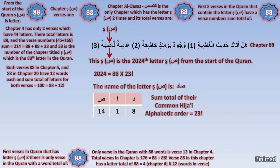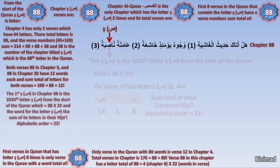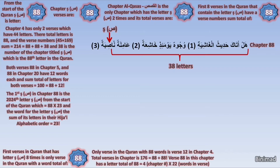Look at all of this — it's truly shocking, but it simply does not end. Looking even closer at those first three verses in chapter 88, we notice that the letter Saad first appeared in chapter 88 after 38 letters. Yes, 38 — if you remember — is the number of chapter Saad, the chapter titled simply the letter Saad.